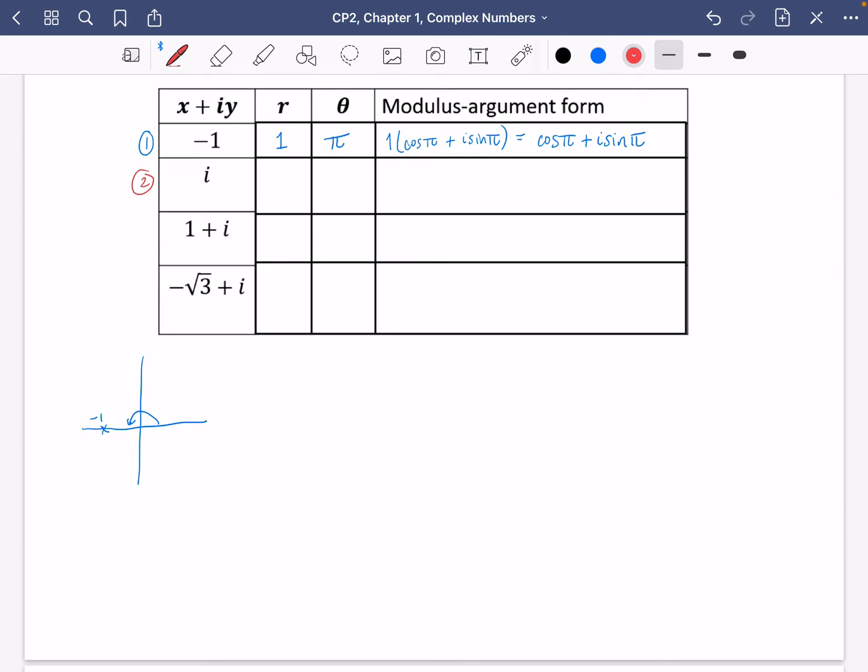We'll do number two here, which is just going to be i. So here's my Argand diagram and i is going to be up here. Pretty easy to see the length of that line is just going to be one. And this time the angle is 90 degrees, which is pi over two. So in its modulus argument form, this one is just going to be cos of pi over two plus i sine pi over two.